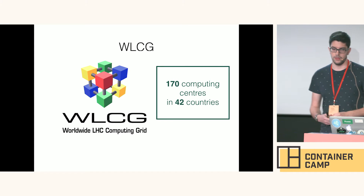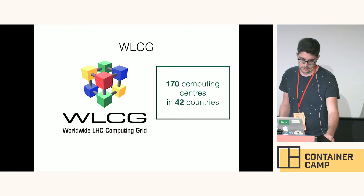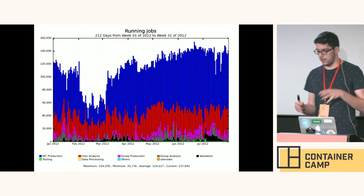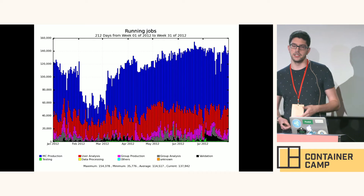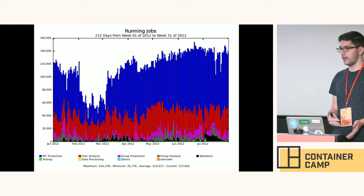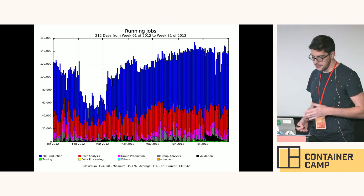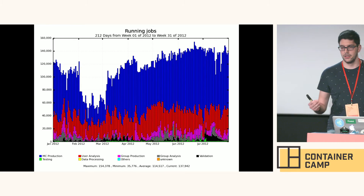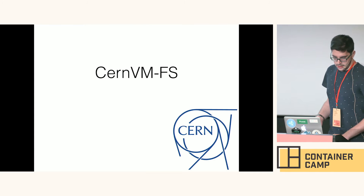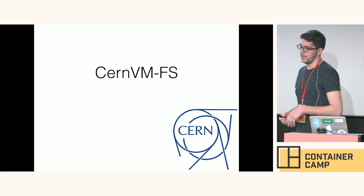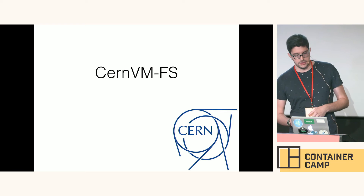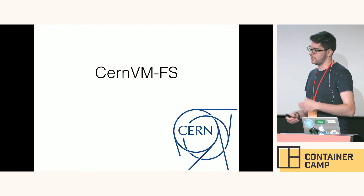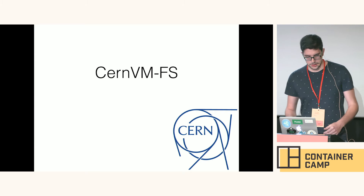Software is running in the worldwide LHC computing grid, spread across multiple countries and many data centers, running hundreds of thousands of parallel jobs every day — tens of thousands per experiment. You can imagine having tens of thousands of parallel jobs all requesting the latest release from a distribution server. This is where CernVM-FS comes into play. They tried various packaging techniques before, but they didn't work out well because of the geographical distribution and size of releases — it's very expensive to send a release every day to all grid nodes.